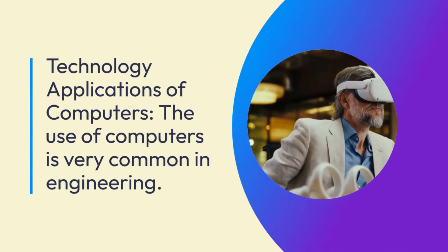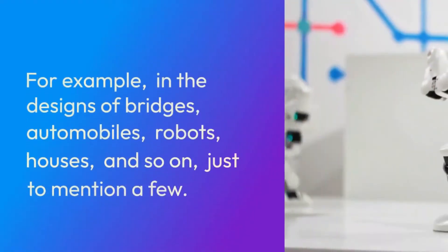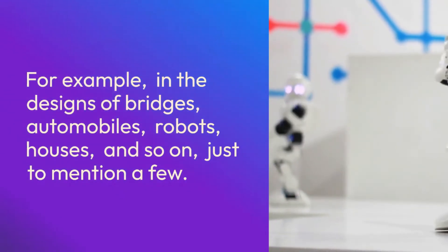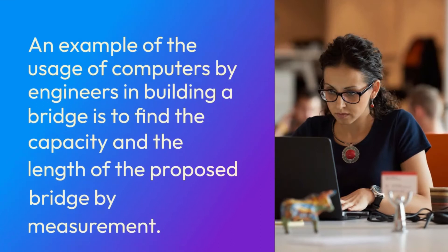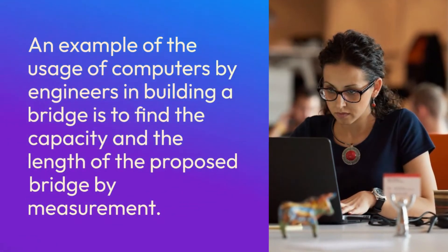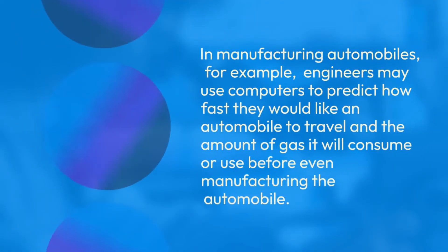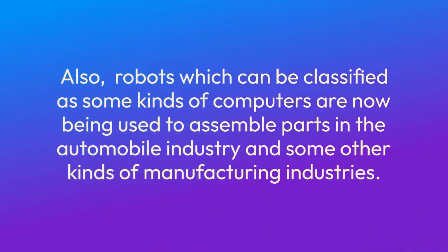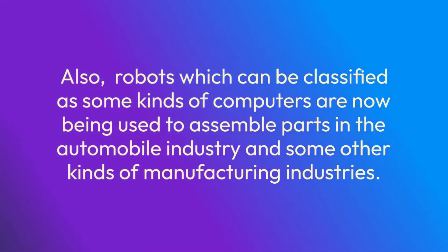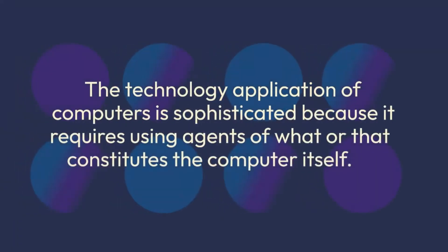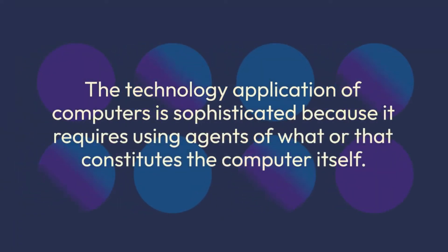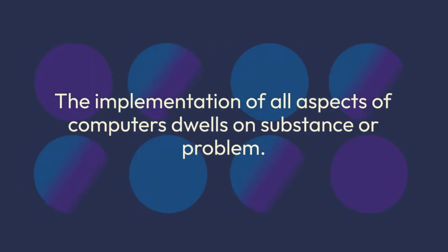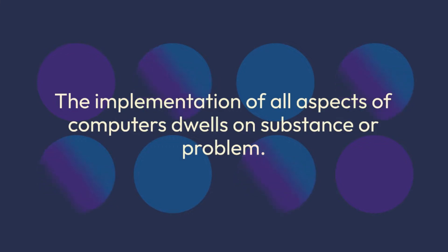Technology applications of computers. The use of computers is very common in engineering — for example, in the designs of bridges, automobiles, robots, houses, and so on. An example of the usage of computers by engineers in building a bridge is to find the capacity and the length of the proposed bridge by measurement. In manufacturing automobiles, engineers may use computers to predict how fast an automobile would travel and the amount of gas it will consume before even manufacturing it. Robots, which can be classified as some kinds of computers, are now being used to assemble parts in the automobile industry and other manufacturing industries. The implementation of all aspects of computers dwells on substance or problem.